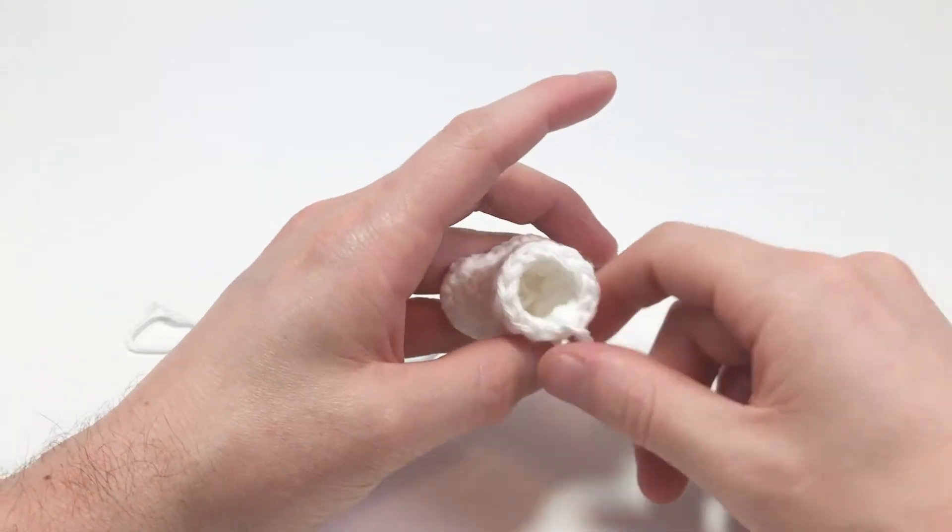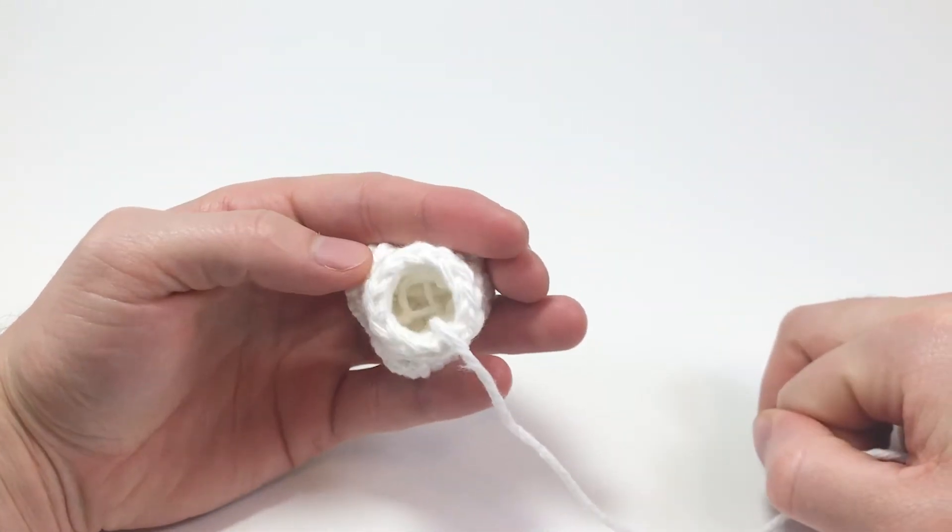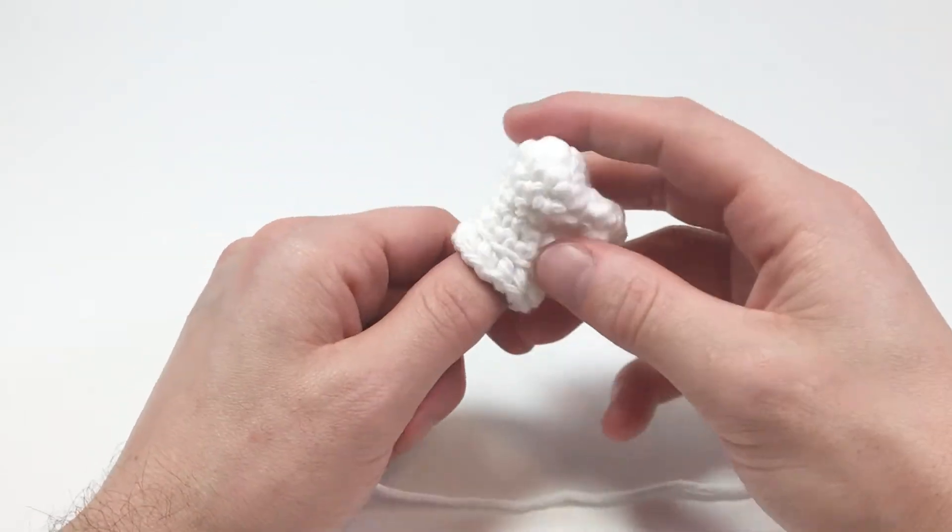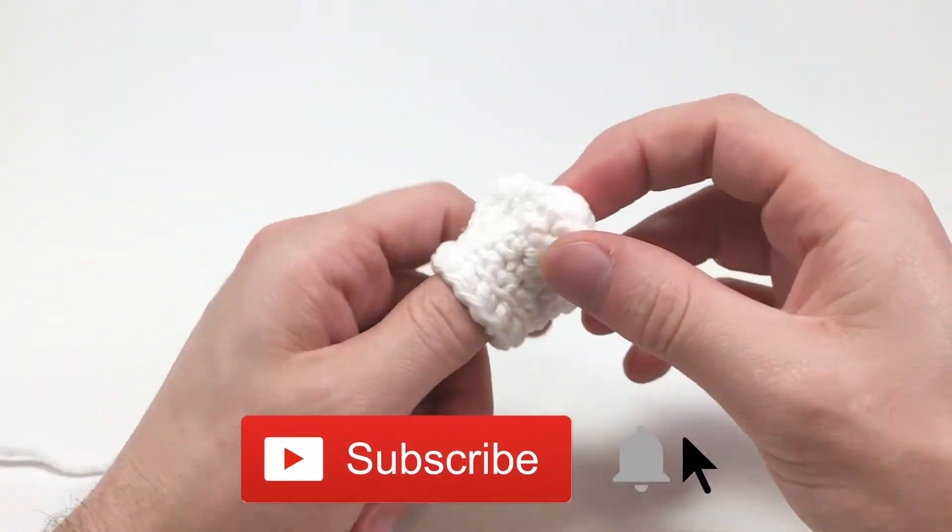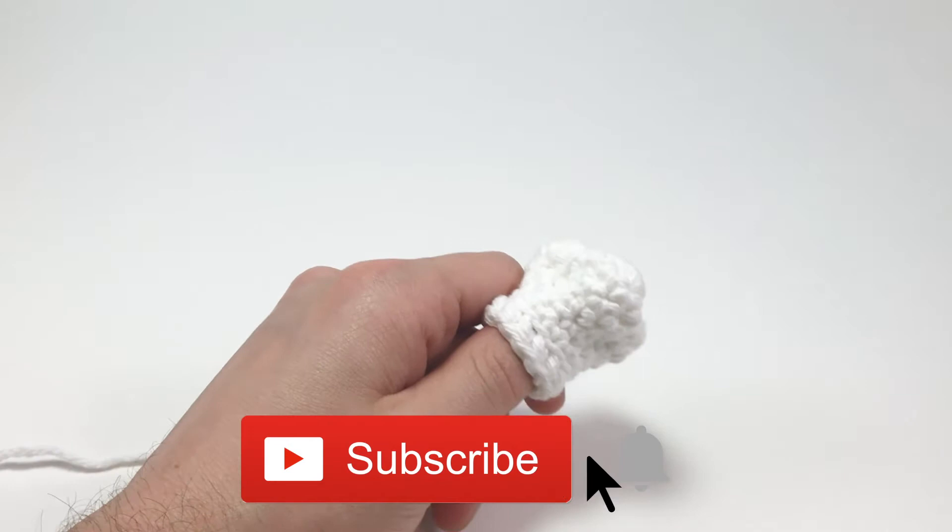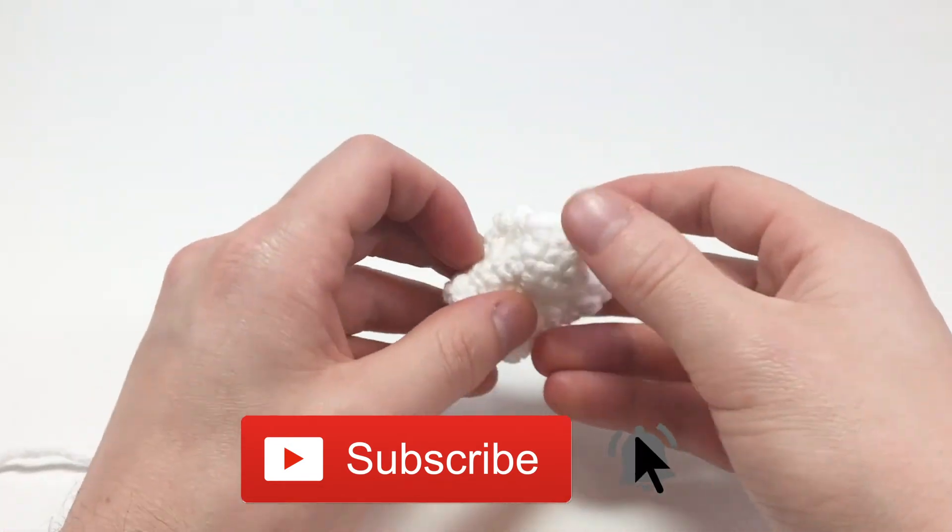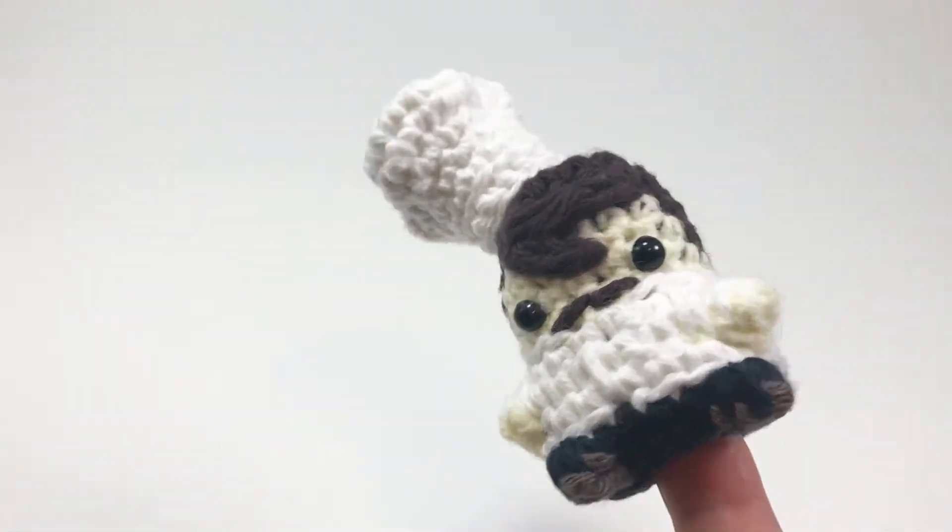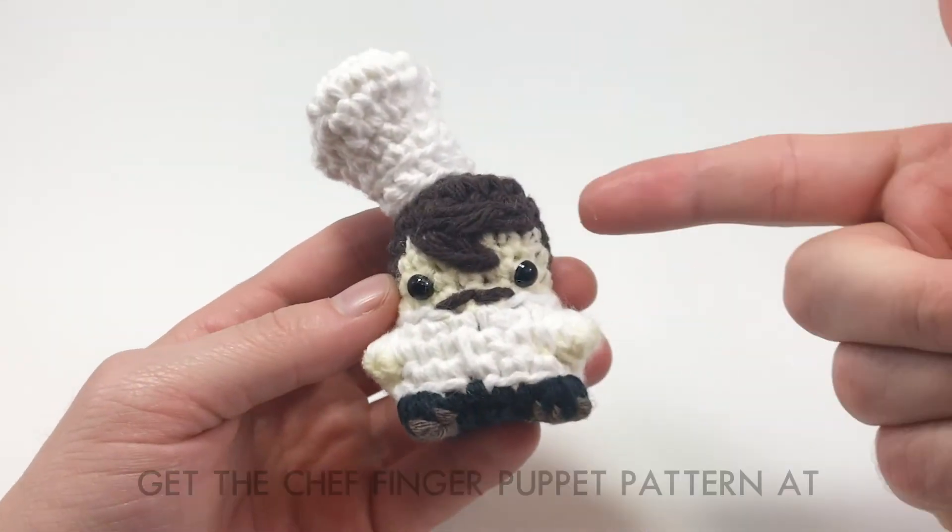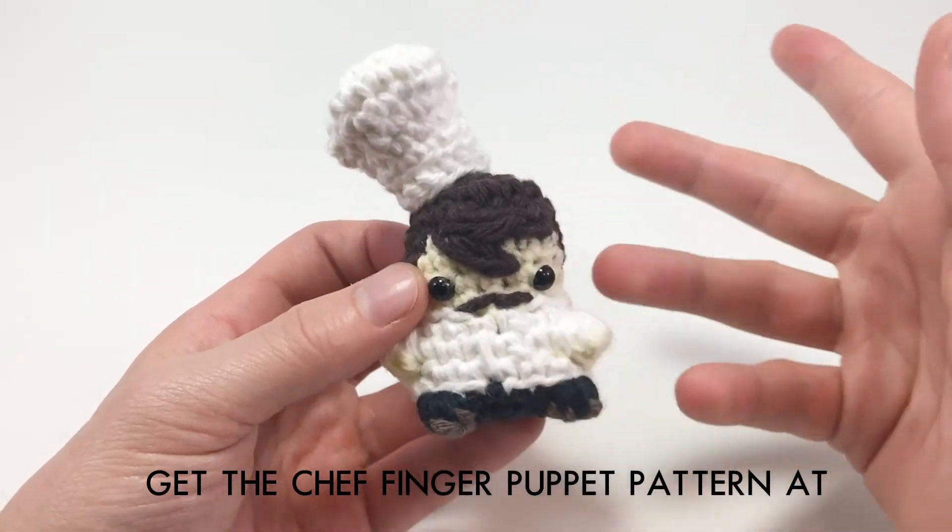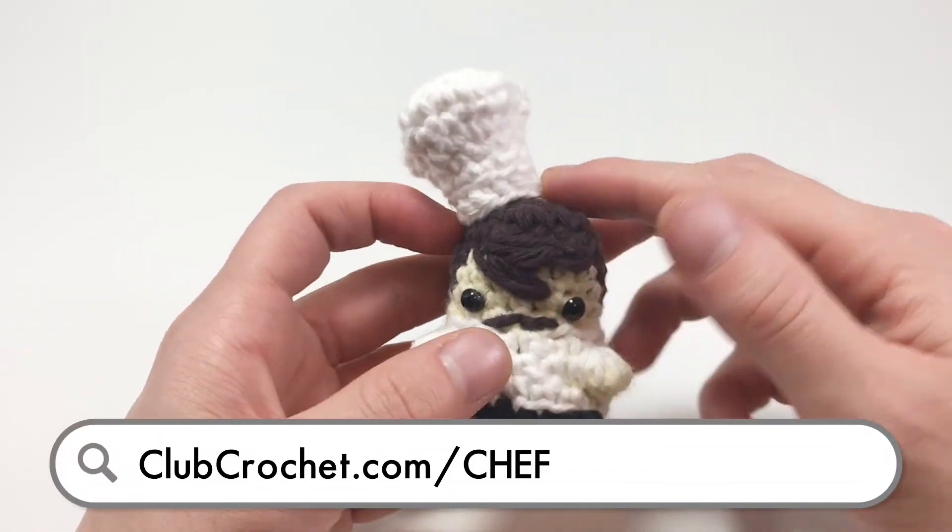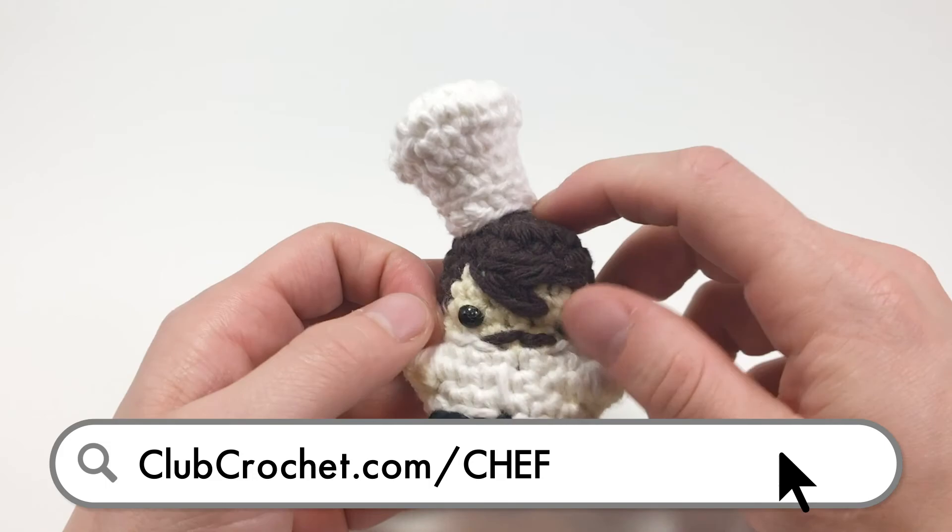But it doesn't really matter what's on the inside. You can see it's kind of a mess in there. But that's alright. And now we have a little chef hat. Now let's continue on and make our Mario or chef if you're making a chef. Thanks so much for watching. If you want to make this full chef and turn it into a Mario or however you like to do, this is a club crochet pattern. So you can get the patterns at clubcrochet.com slash chef.